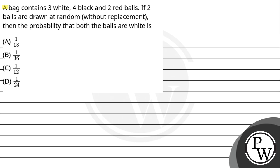Let's read the question. A bag contains three white, four black, and two red balls. If two balls are drawn at random without replacement, then the probability that both the balls are white is.